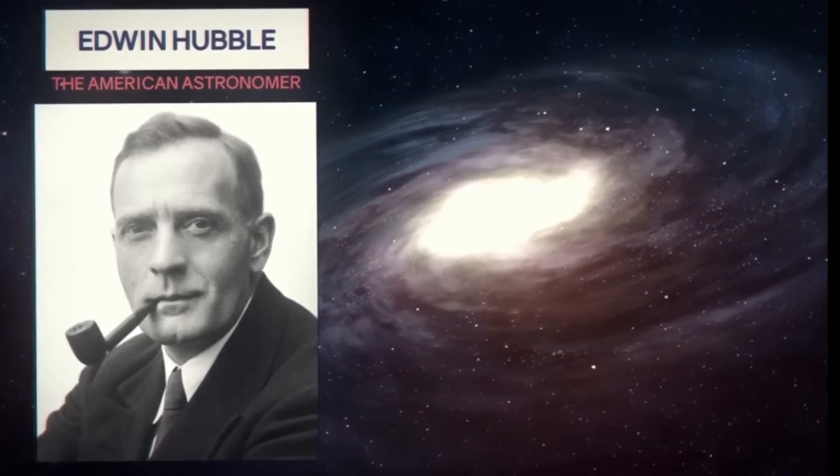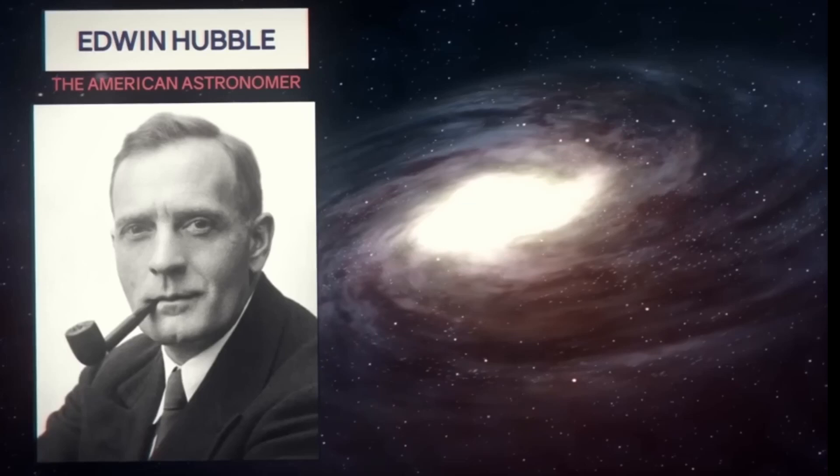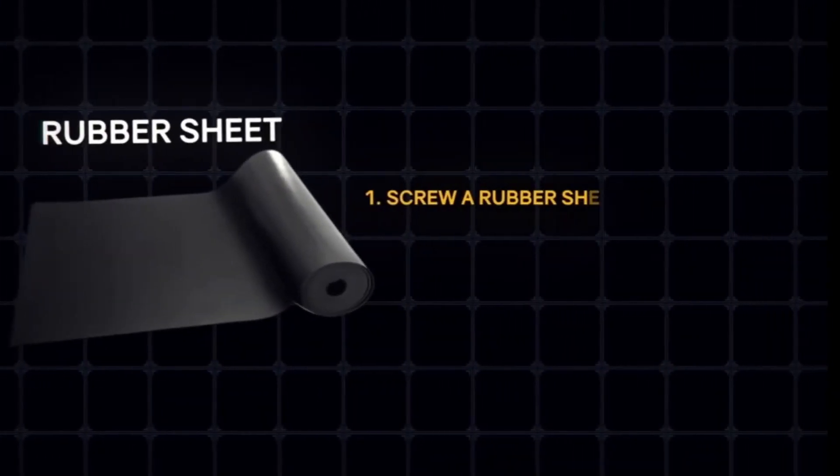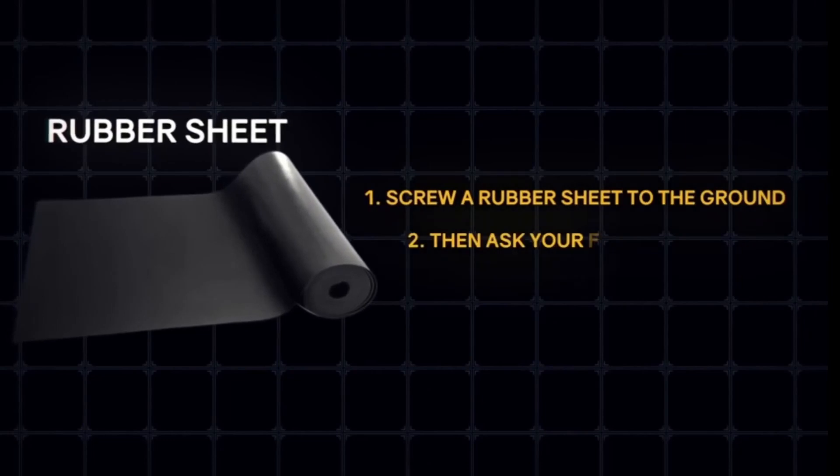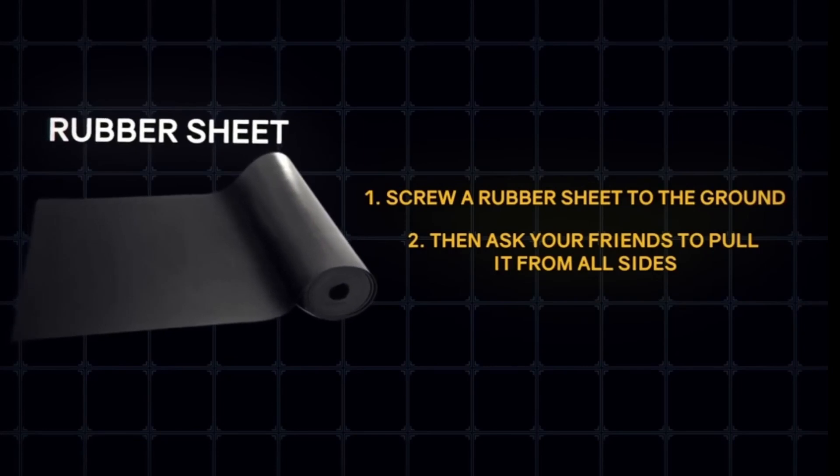And because of that, we can assume they all started moving from the same place. In ordinary life, finding the point of expansion of an object is easy. Screw a rubber sheet to the ground and then ask your friends to pull it from all sides. You'll notice that the point where the sheet is attached is the center of its expansion.